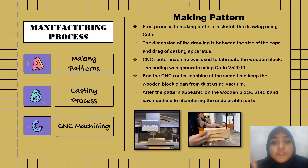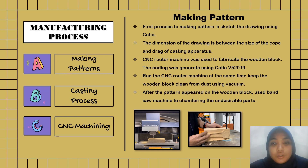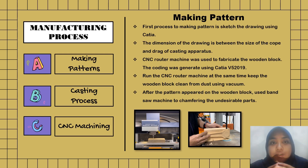For making patterns, the first process is to fetch the drawing using CATIA. The dimensions of the drawing are based on the size of the block and the shape of the casting. A CNC router machine was used to fabricate the wooden block, and the coding was generated using CATIA V5 2019. While running the CNC router machine, we kept the wooden block clean from dust using a vacuum. After the pattern appeared on the wooden block, we used a bandsaw machine to chamfer the undesirable parts of the pattern.